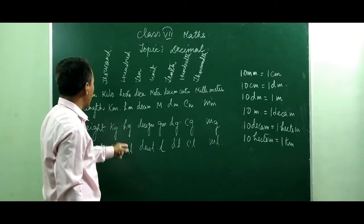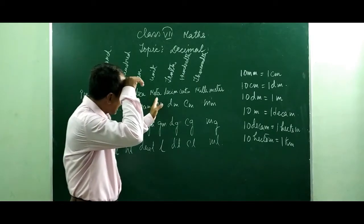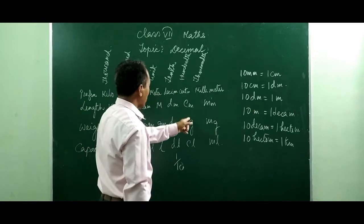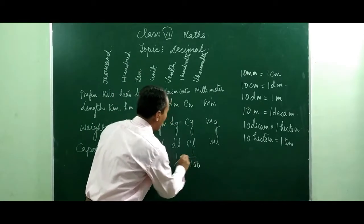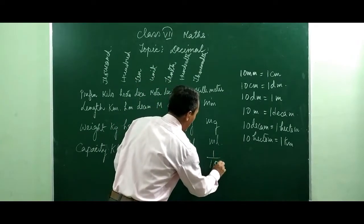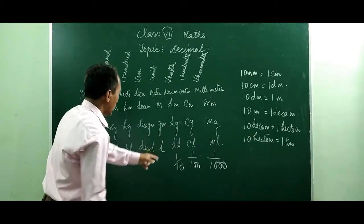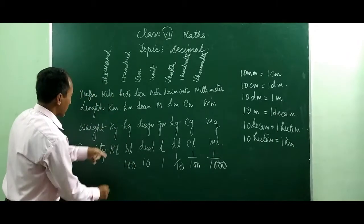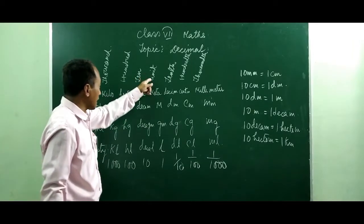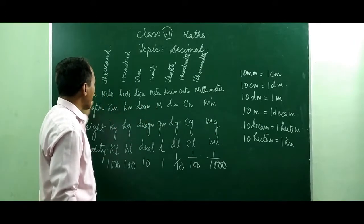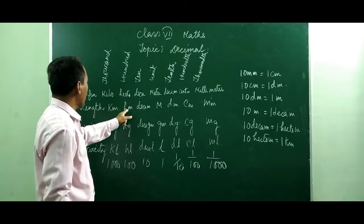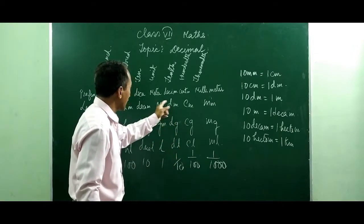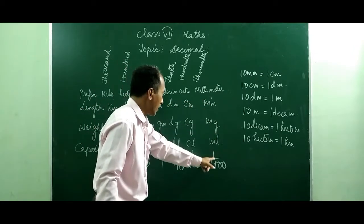Here is the tenth place, here is the hundredth place, and here is the thousandth place. The decimal side after the unit place: tenth place means 1 by 10, hundredth place means 1 by 100, thousandth place means 1 by 1000. Considering meter or gram as the unit place, the tenth place is decameter, hundredth place is hectometer, thousandth place is kilometer. Similarly after the decimal: decimeter is the 1 by tenth, centimeter is 1 by 100, and millimeter is the 1 by thousandth place.